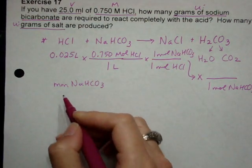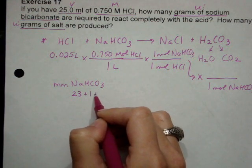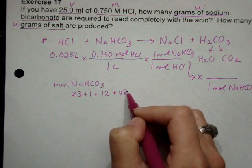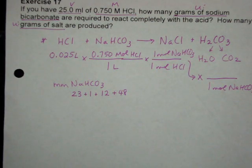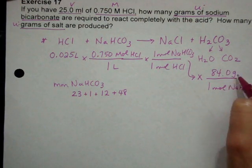And if I just estimate, essentially, I'll be okay. Sodium is 23, plus hydrogen is 1, plus carbon is 12, plus 3 oxygens, that's 48. Then I can add all those up.